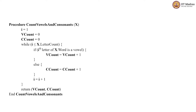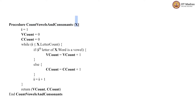Hello CT students. In this tutorial, we will look at this particular pseudocode and what it does. This is for a procedure called count vowels and consonants. This procedure takes a parameter x which is a card, and this card has attributes such as letter count and the word.